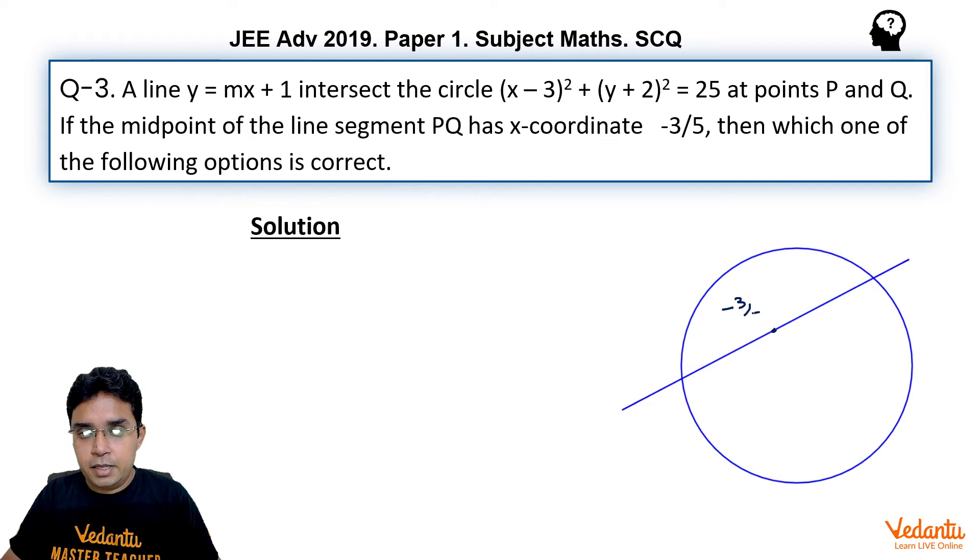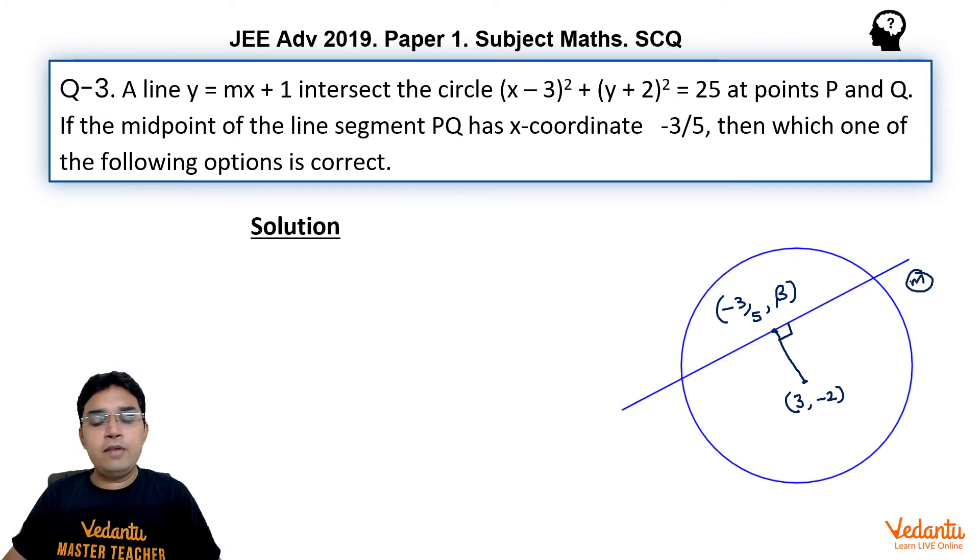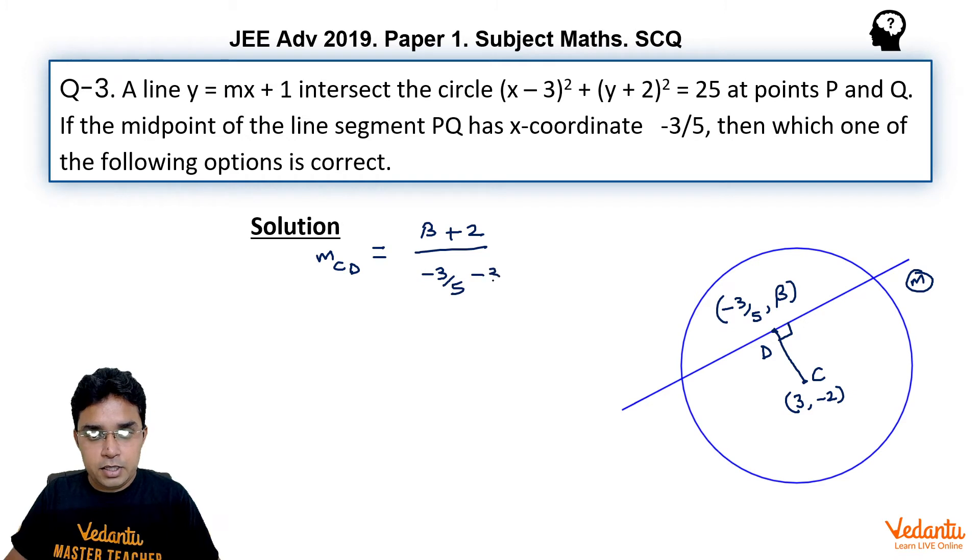Suppose this is midpoint minus 3 upon 5 comma beta. So if you join this midpoint to the center of the circle which is (3, minus 2), they should meet at 90 degrees. Already we know the slope of this given line which is m. Let us call this midpoint as D and this center as C. So the slope of line joining C and D can be found by (y2 minus y1) upon (x2 minus x1). So it would be (beta minus minus plus 2) upon (minus 3 upon 5 minus 3).